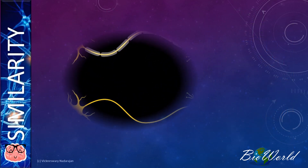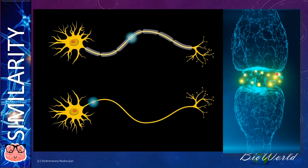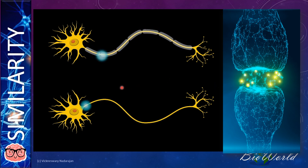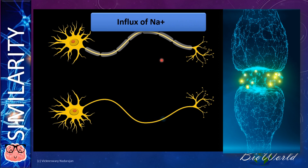This is the transmission of impulse along the axon, and this diagram is the transmission of impulse across the synapse. What is most apparent in their similarity is they both serve to transmit impulse. In the process of transmitting impulse, they share some similarities such as, first, the influx of sodium ions.